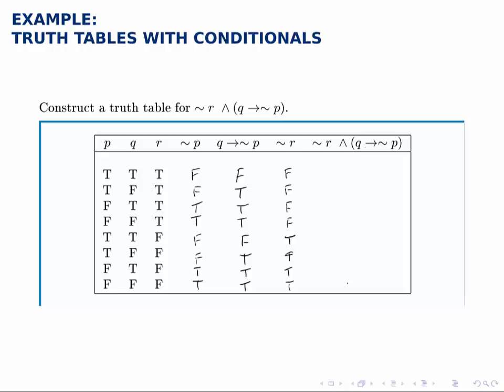Lastly, to get our final statement, we'll combine not r with q implies not p and we'll use the and operator. So remember and is true when both of the pieces are true. If at least one of them is false, it's going to be false.